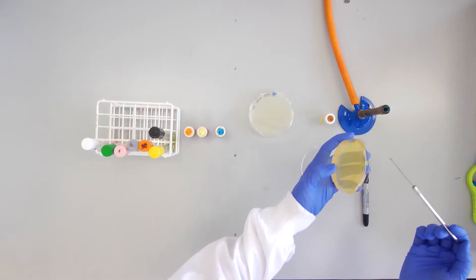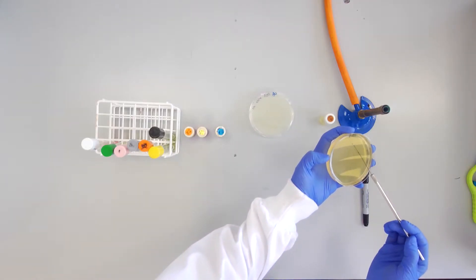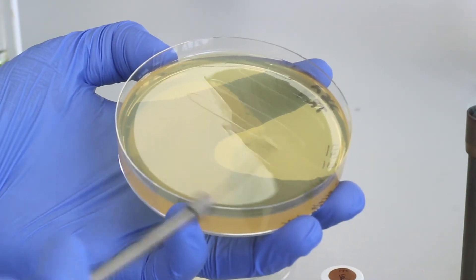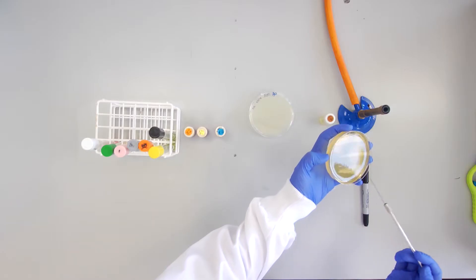Next, make a single zigzag streak on the 4% tryptone plate which is labelled TRY.